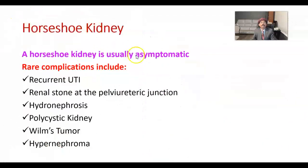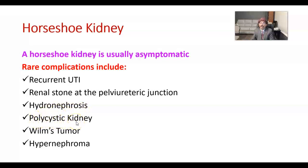A horseshoe kidney is usually asymptomatic. Rare complications include recurrent UTI, renal stones at the pelvi-ureteric junction or elsewhere, hydronephrosis due to obstruction of urine flow, polycystic kidney, Wilms tumor which is the childhood kidney tumor, and hypernephroma which is the adult kidney tumor.